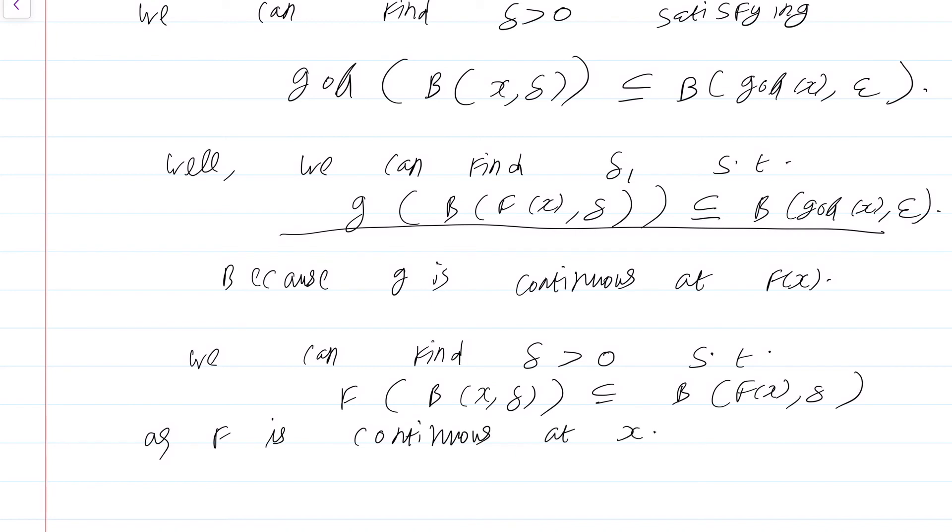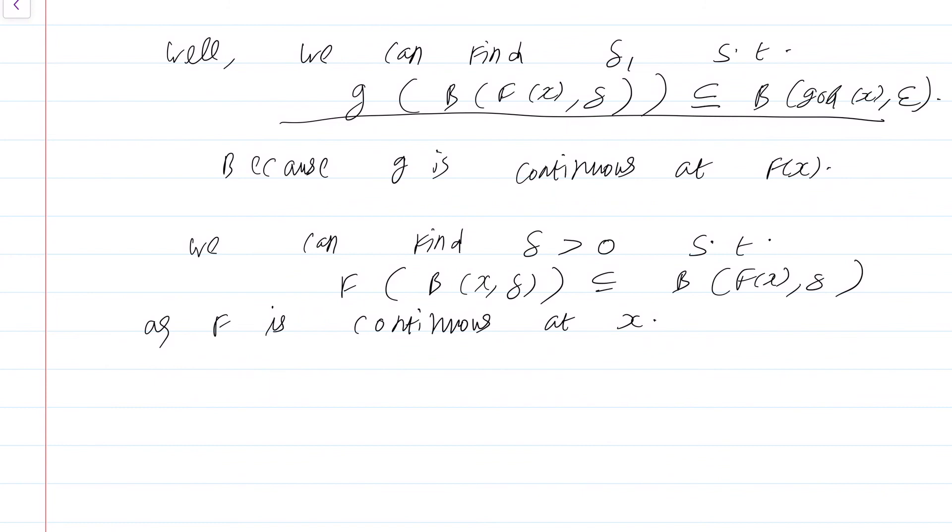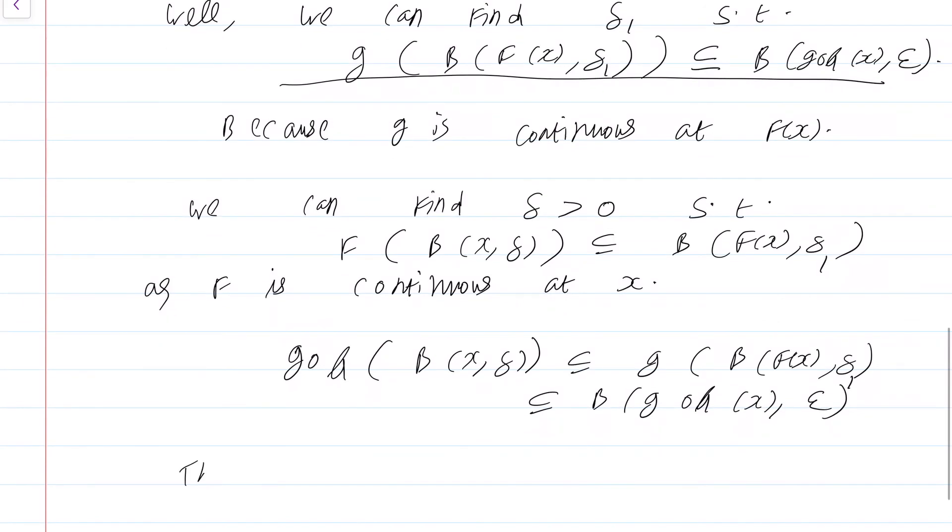Putting 2 and 2 together, we get 4 which is what we want. g∘f(B(x, δ)) is contained in g(B(f(x), δ₁)), which is contained in B(g∘f(x), ε). This completes the proof.